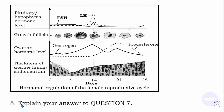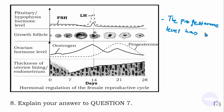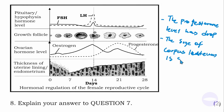Question eight, the last question: explain your answer to question number seven. We can give two reasons. First, the progesterone level has dropped. Second, the size of the corpus luteum is shrinking. If fertilization had taken place, the corpus luteum would remain large and the level of progesterone would remain constantly elevated. Since neither is the case, fertilization has not taken place.